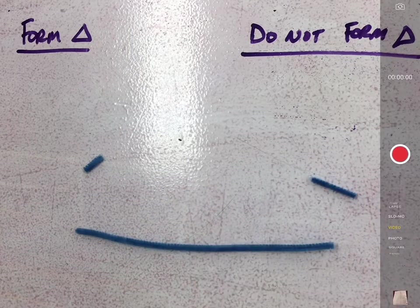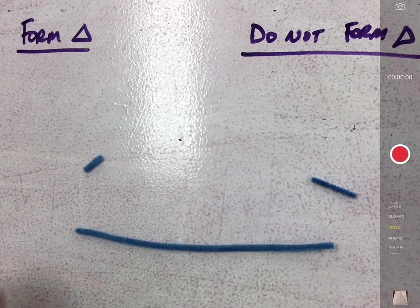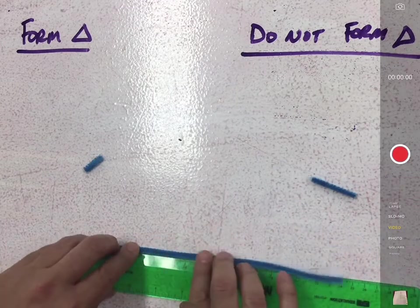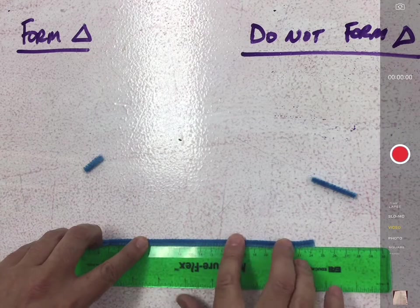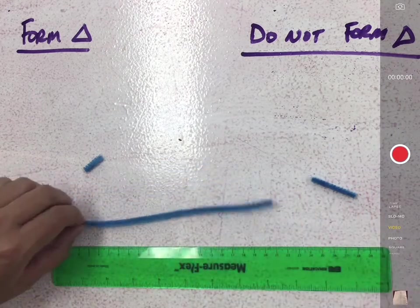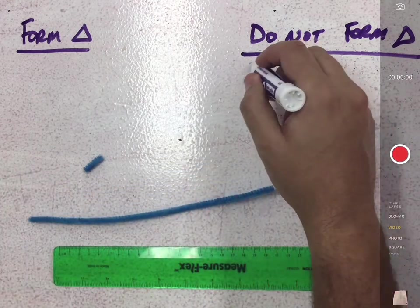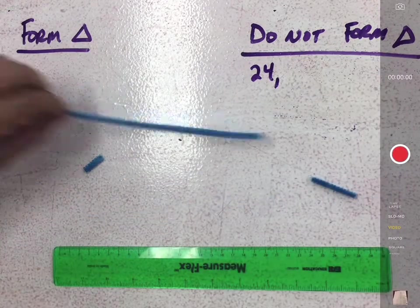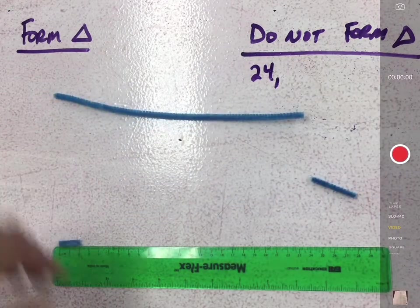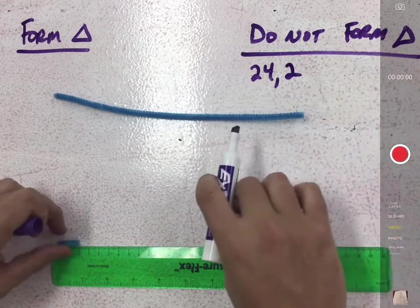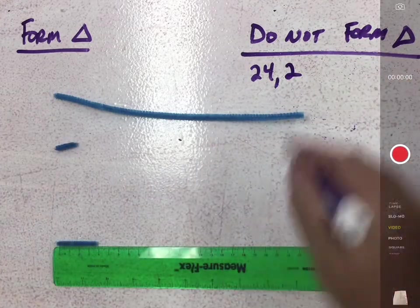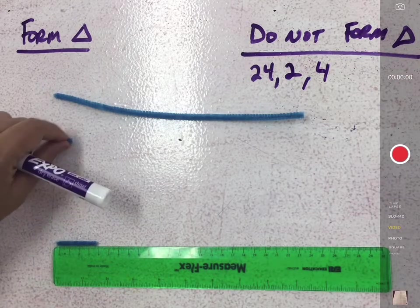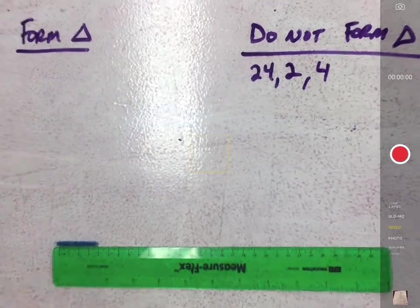These three clearly do not make a triangle. So what I want to do is look at the lengths. If I measure this segment, it comes out to be 24 centimeters long, and this did not form a triangle. So if one side is 24, the other side measures 2, and the third side measures 4 centimeters, those do not make a triangle.